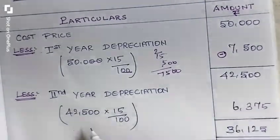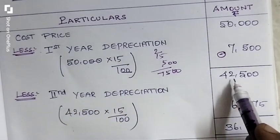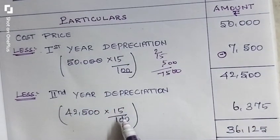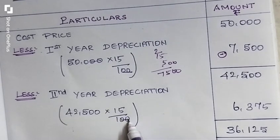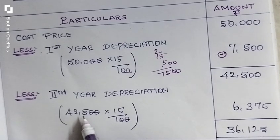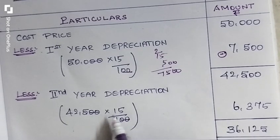For 42,000, we have to find the second year depreciation from 42,500 into 15% at the rate of depreciation. For that, these 2 zeros cancel. Remaining 15 into 425.